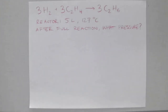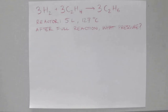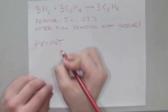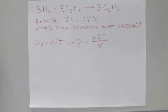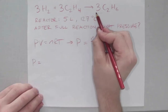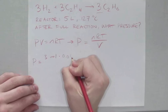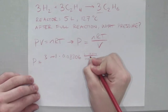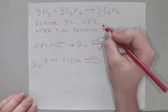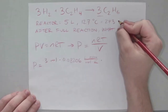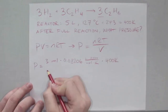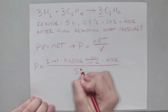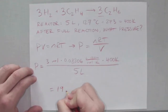Let's see how PIVNERT applies to an actual reaction. We have 3 moles of hydrogen plus 3 moles of ethylene reacting to form 3 moles of ethane. In this reactor, the volume is 5 liters and the temperature is 127°C. If all of this reacts, what is the pressure of the vessel? Rearranging PIVNERT for pressure and plugging in: 3 moles × 0.08206 L·atm/mol·K × 400 K (since 127 + 273 = 400 K), divided by 5 liters, gives us 19.69 atmospheres.